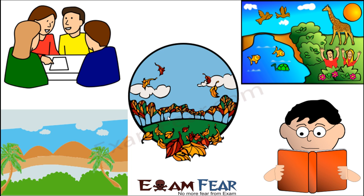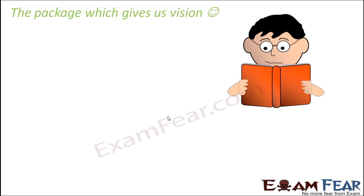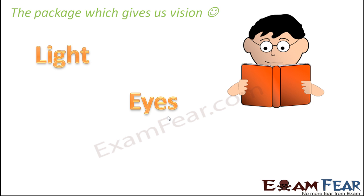Light is actually a very beautiful thing. When we talk about our vision — about what we are seeing — light is not the only thing needed. Light is one primary thing required to see things around us, but other than light, there are a few other things also needed. The second thing would be our precious eyes, because our eyes are the organs which actually help us to see objects — but only when light is present.